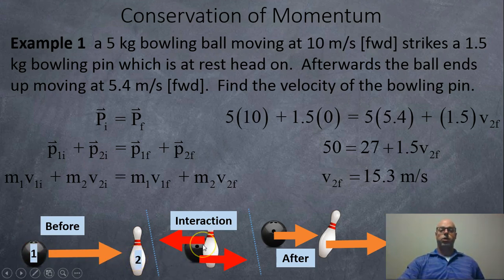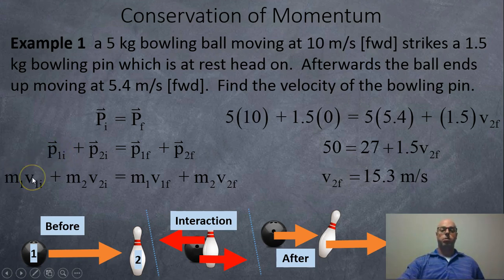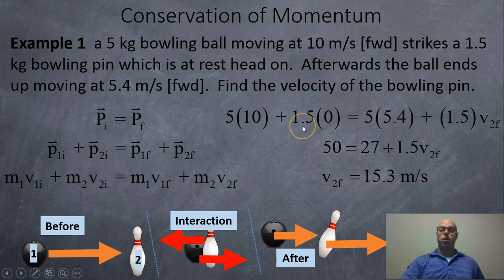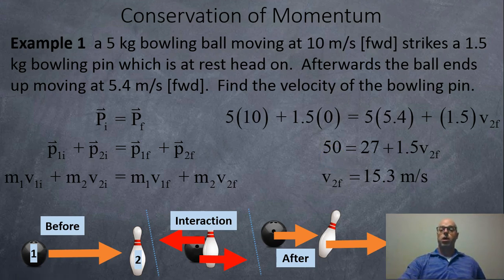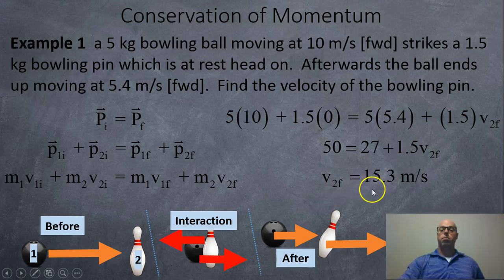There's an action-reaction force pair occurring, and then both objects are moving after. The bowling ball should slow down and the bowling pin should go flying off. Replacing the P's with mass times velocity: 5 kg × 10 m/s + 1.5 kg × 0 = 5 kg × 5.4 m/s + 1.5 kg × V_final. So we get 50 kg·m/s of momentum input. The bowling ball still has 27 after the interaction, and the bowling pin flies off at 15.3 meters per second forward.